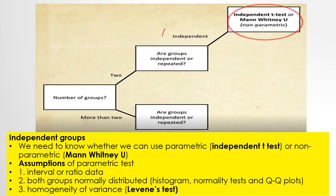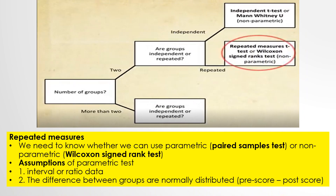If the 2 groups are repeated measurements taken on the same participants at different time points — for example, pre-exercise and post-exercise scores — use a paired samples t-test for parametric data, or Wilcoxon signed-rank test for non-parametric. Assumptions of the parametric test include: interval or ratio data, and the difference between groups must be normally distributed.